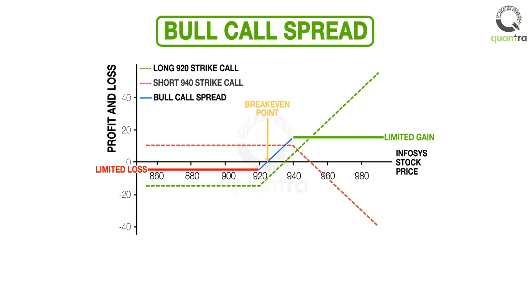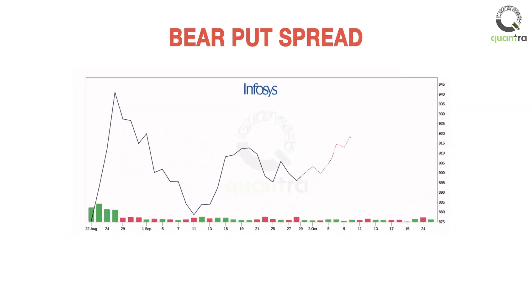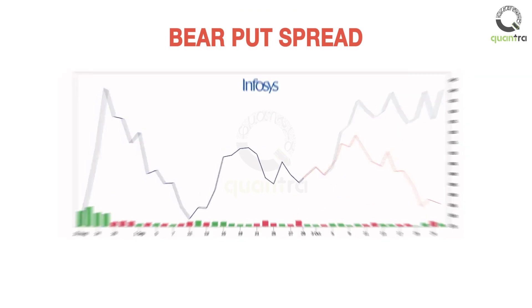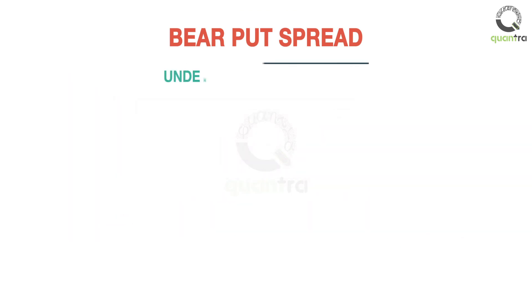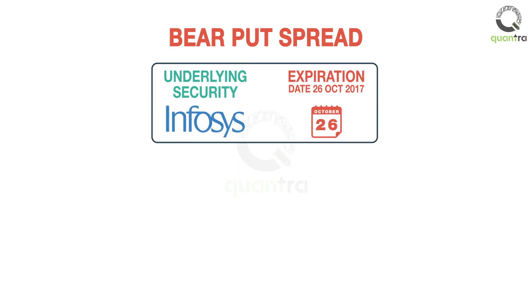The second strategy that we are going to discuss in this video is called the bear put spread. The bear put spread strategy is used when the outlook is moderately bearish. The strategy involves options on the same underlying security, with the same expiration date, but with different strike prices.